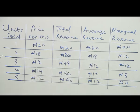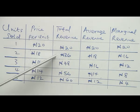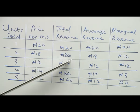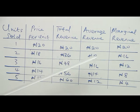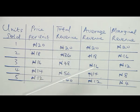Now let's assume the price is influenced — where the price per unit is 18 naira and units sold happen to be 2. The total revenue is 36 naira. As the price reduces, more units were sold, leading to a total revenue of 36. The average revenue is 18.